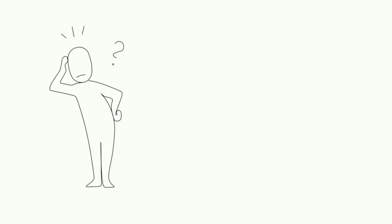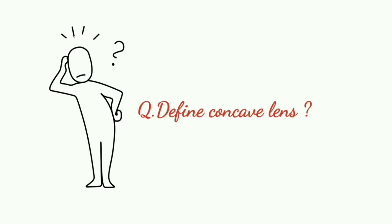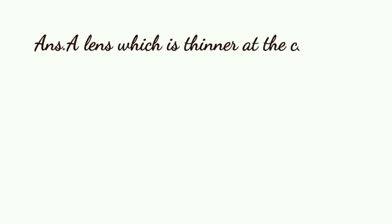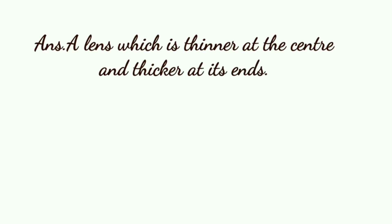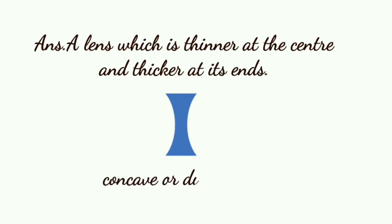Next: define concave lens. Concave lens kya hota hai? A lens which is thinner at the center and thicker at its ends. Iski diagram is tarah se bani hoti hai. Aur concave lens ko hum diverging lens bhi bolte hain. Concave lens woh hota hai jo center mein se patla hota hai aur ends mein mota hota hai.